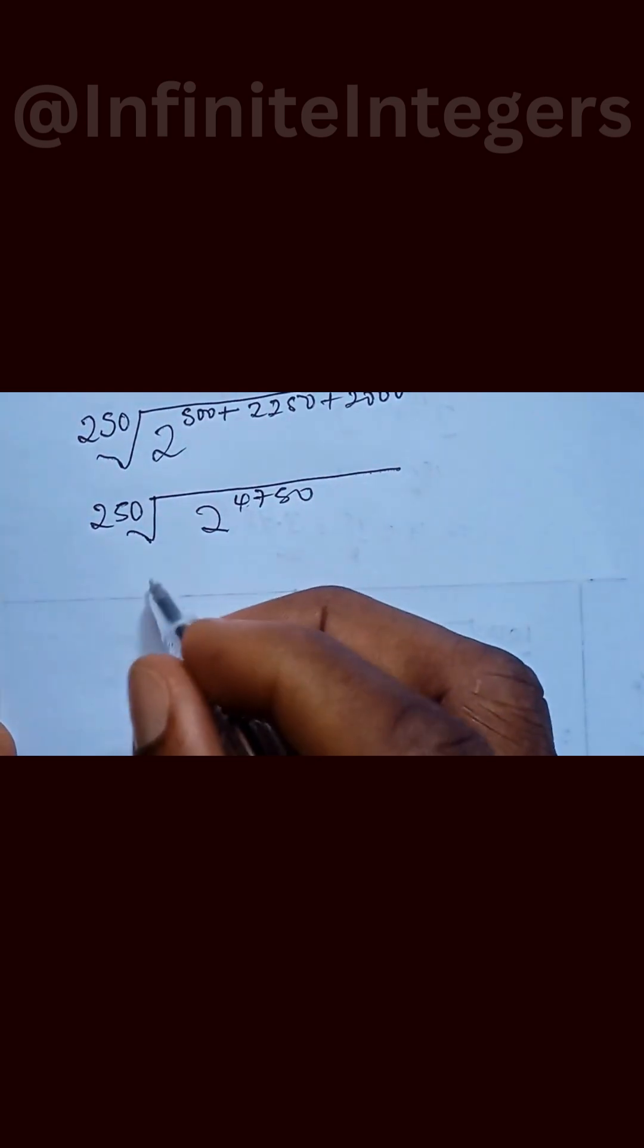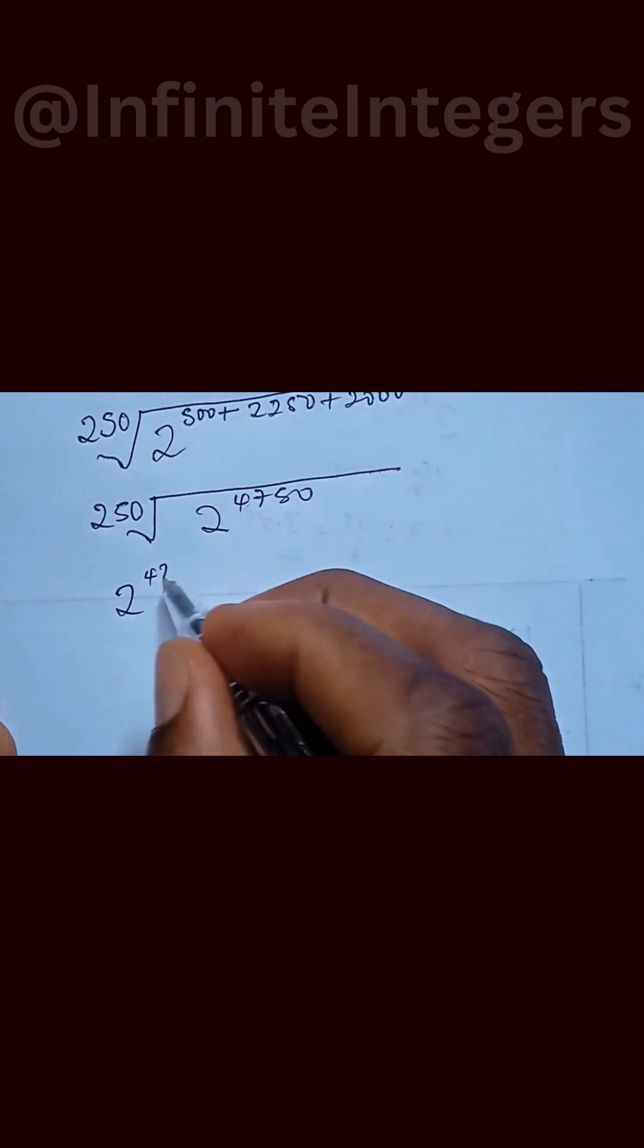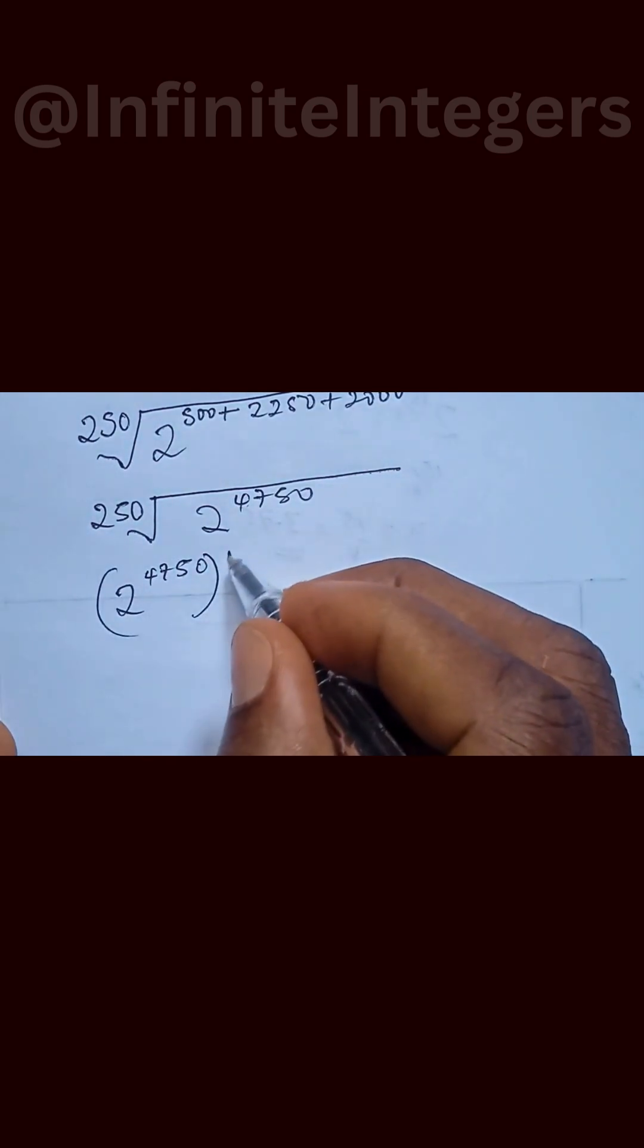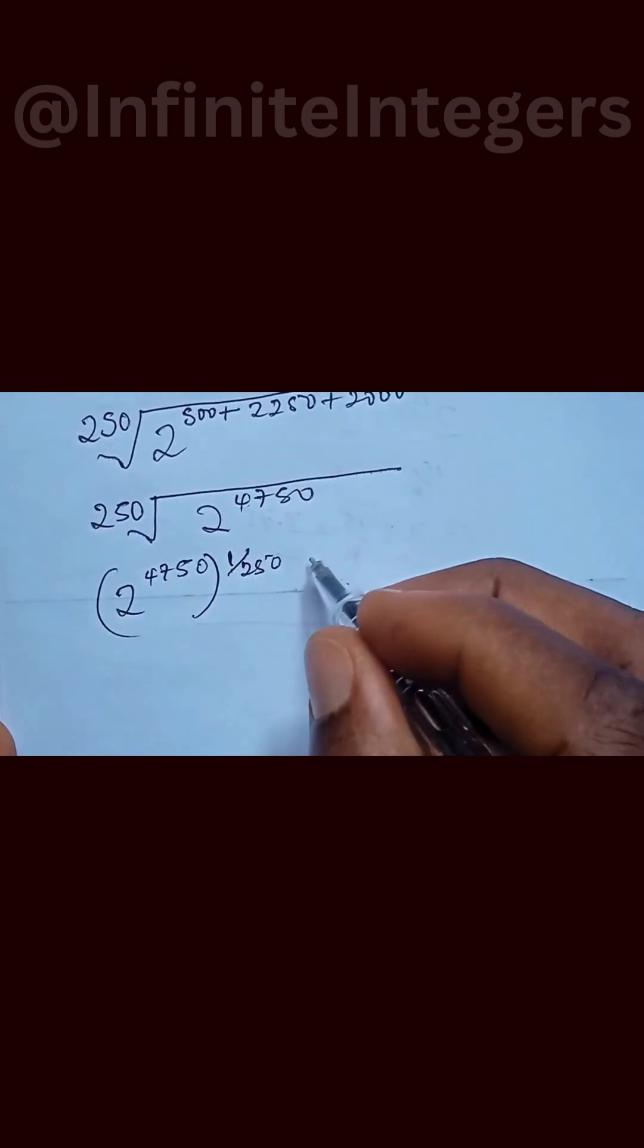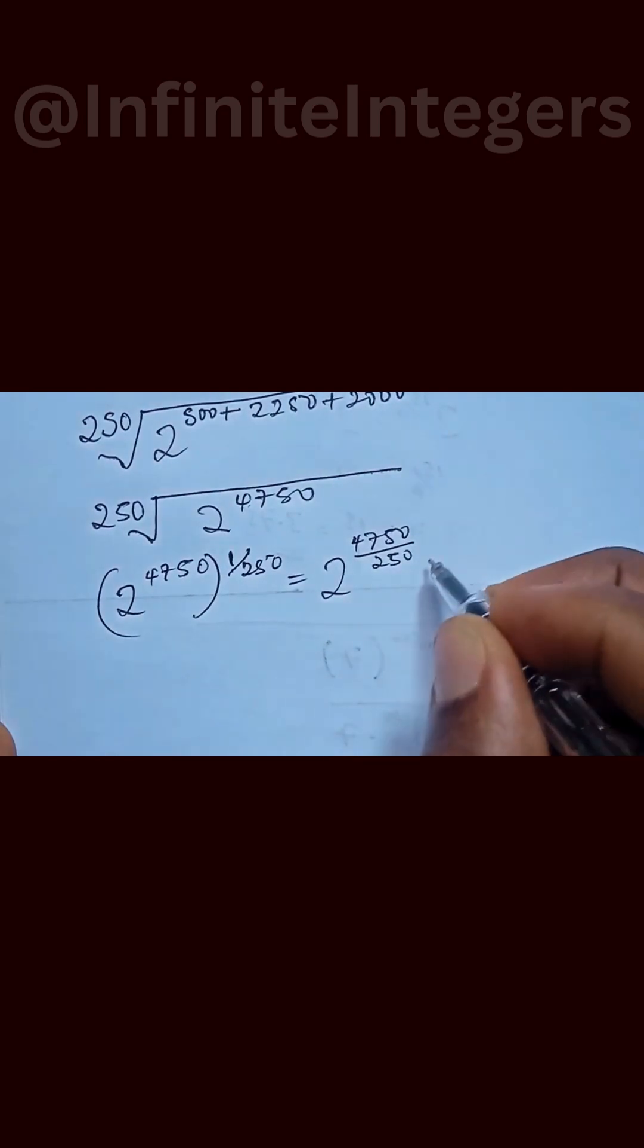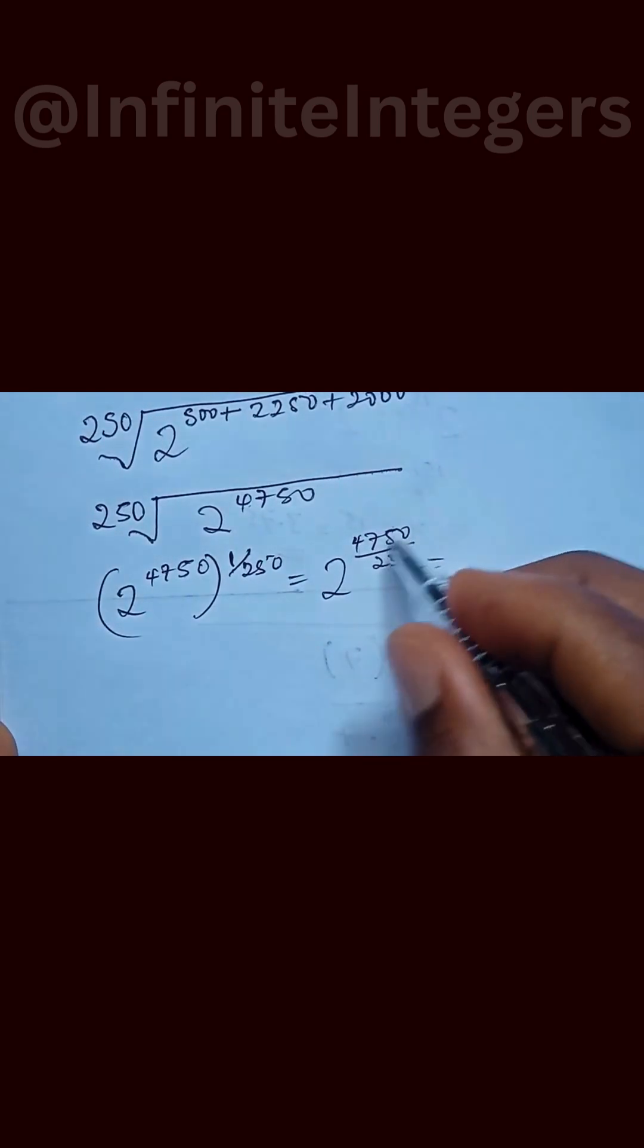And we can write this as 2 to the power of 4750 into a bracket to the power of 1 over 250, which is equal to 2 to the power of 4750 over 250.